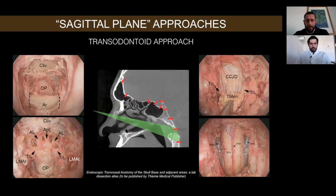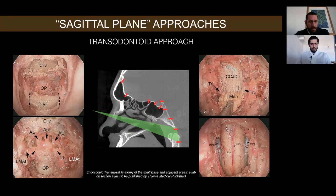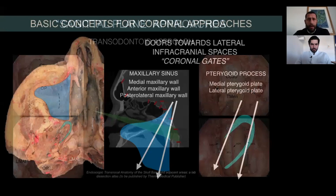The last sagittal approach before the CASAN line — our limit for transnasal approaches in the sagittal view — is the trans-odontoid approach for malformations of the odontoid. After harvesting the nasopharyngeal flap, you can see the arch of the atlas and the odontoid process. After two osteotomies, we remove the arch of the atlas and expose the odontoid process. You can see all the ligaments: apical, alar, and transverse. The lateral masses of the atlas, tectorial membrane, dura of the craniocervical junction, and the medulla oblongata behind the dura after opening are all visible.